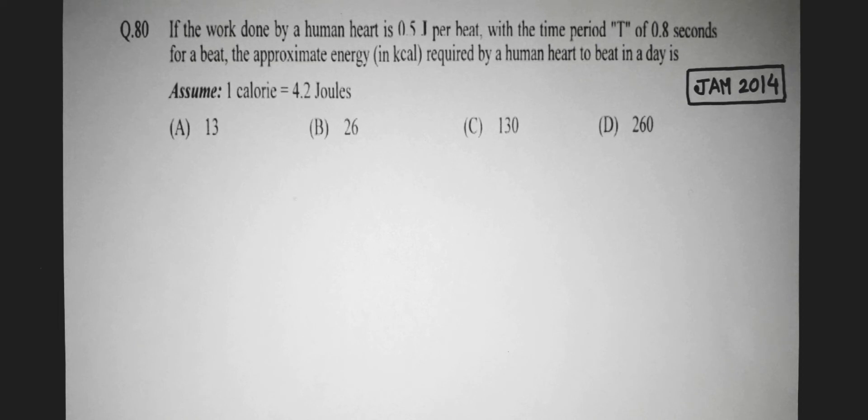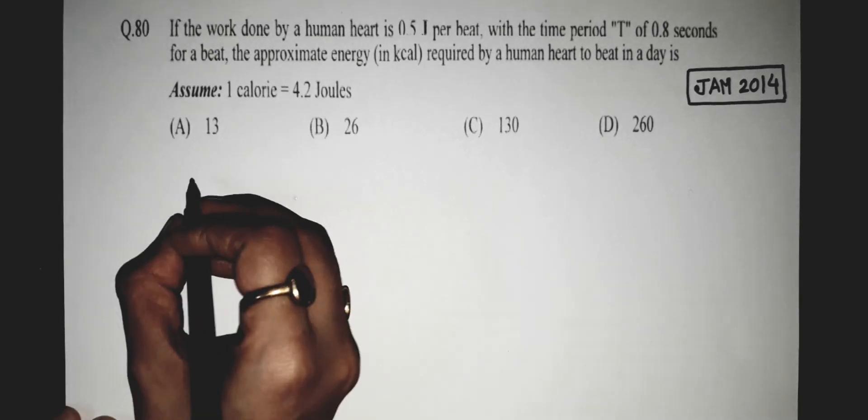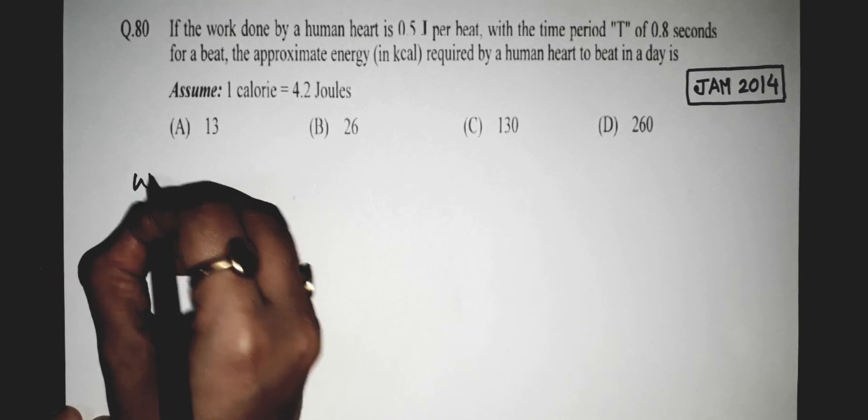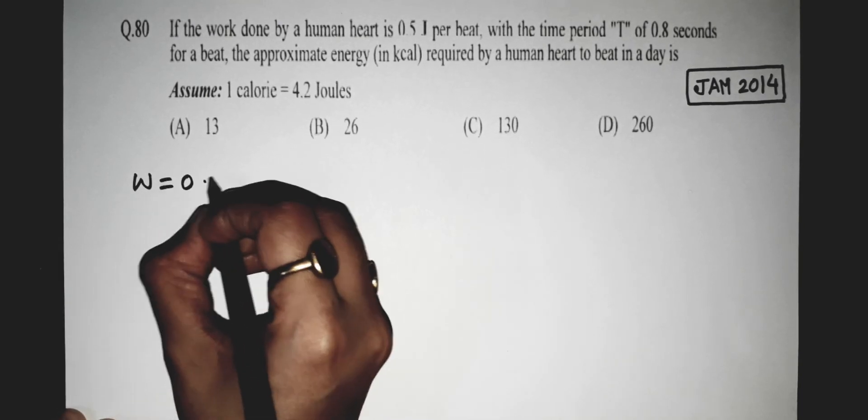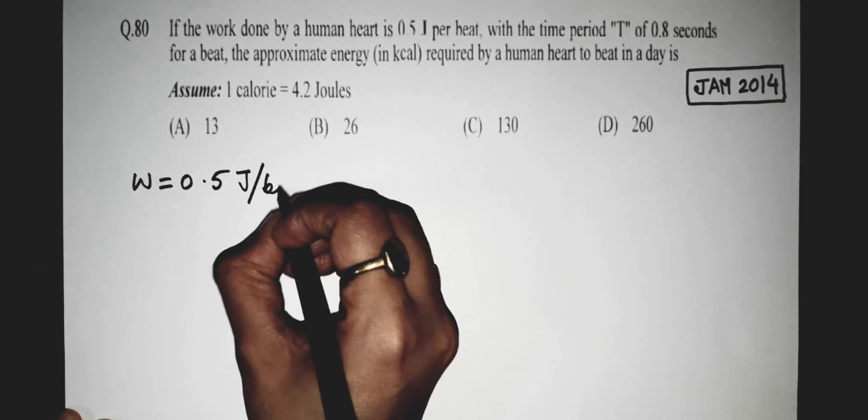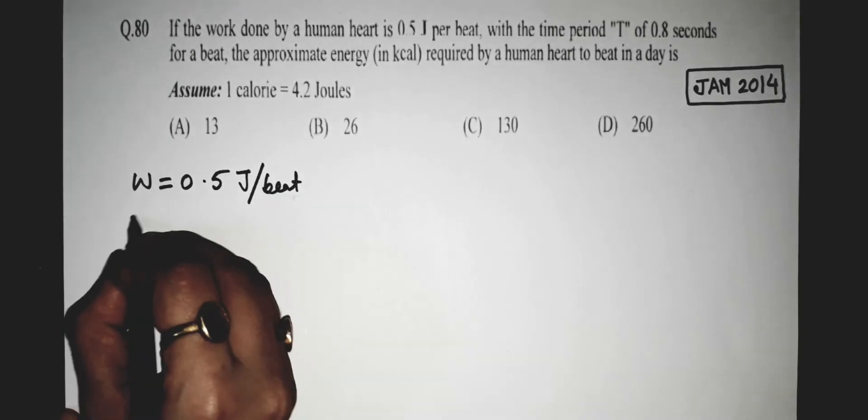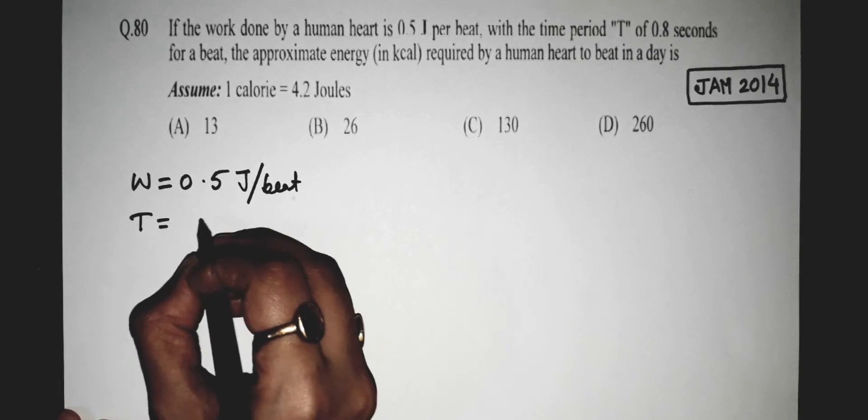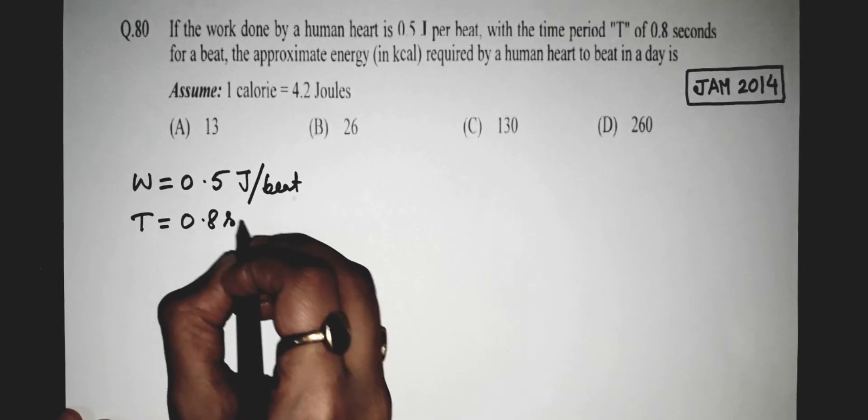And you are asked to assume 1 calorie equals 4.2 joules, which is the standard formula for conversion of joule to calorie or calorie to joule. So here, given W equals 0.5 joules per beat, and time period T equals 0.8 seconds.